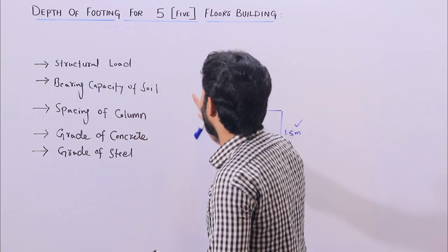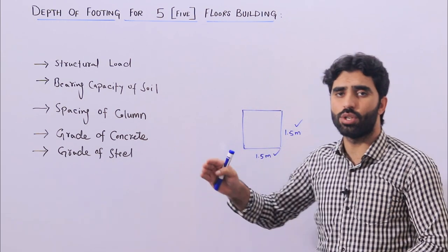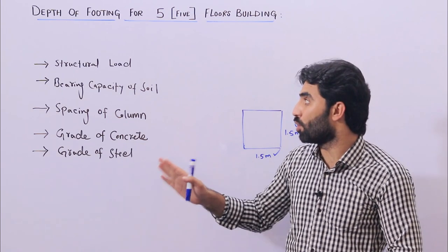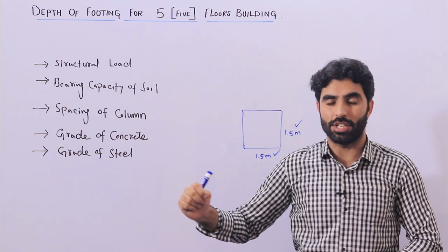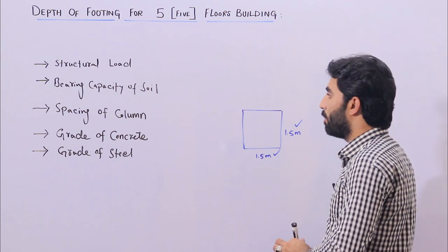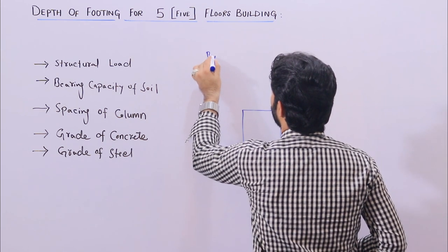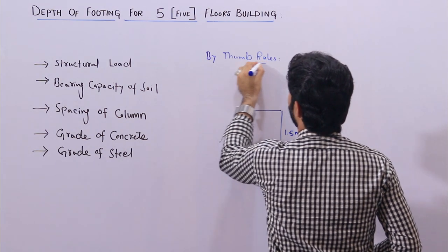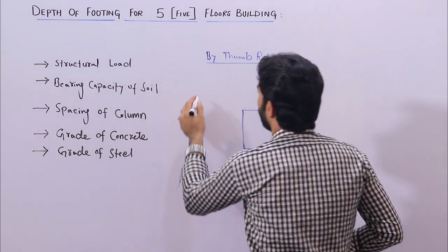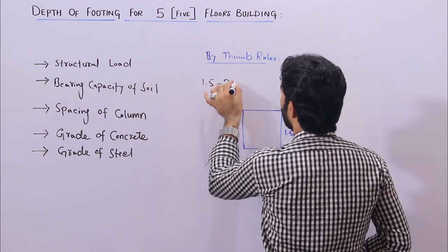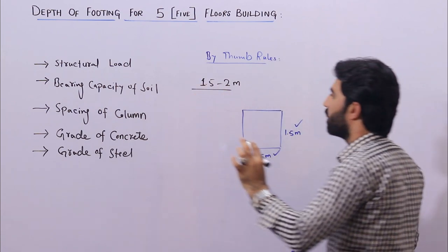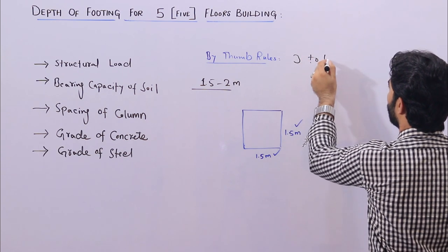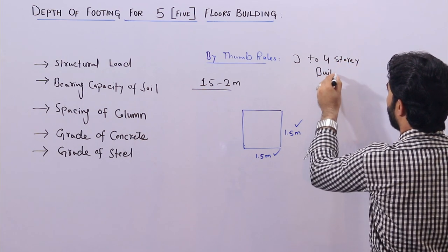For example, if you are going up to three or four stories and you don't know about all these things, bearing capacity is very important as I told you, along with structure load, spacing of column, grade of concrete, and grade of steel. If you don't know but you want to build your house, I'm telling you by thumb rule: for three to four story residential buildings — not commercial buildings — the depth of footing you can keep from 1.5 to 2 meters.